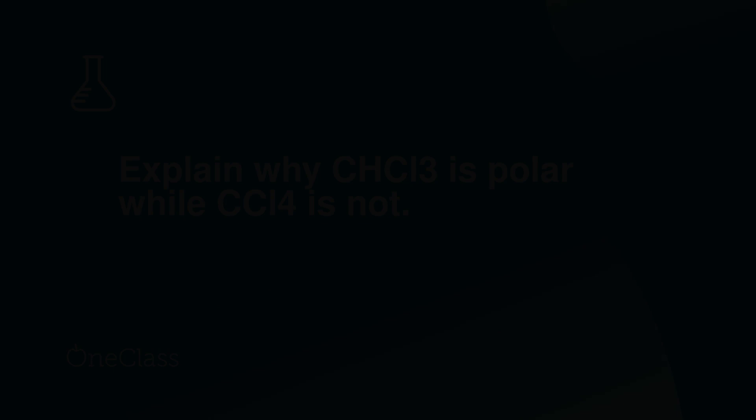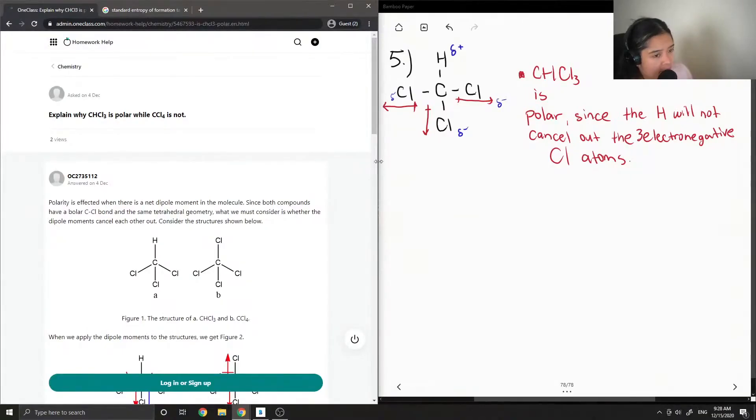Okay, so question number six is kind of similar to the previous question except it asks explain why CHCl3 is polar and why CCl4 is not. So I can just write this on the same page just so that we compare. And now let me draw my structure for CCl4.